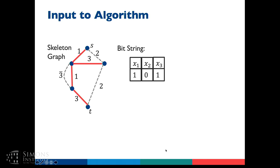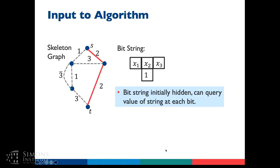For example, if the input bit string were 1, 0, 1, we'd return yes because S and T are connected. If the input bit string was 0, 0, 1, we remove all edges corresponding to 1, giving a graph that's no longer connected, so we output no. We assume the bit string is initially hidden, and we can ask questions to learn the values of the bits. For instance, if we learn that x2 equals 1, we immediately know the graph is connected.